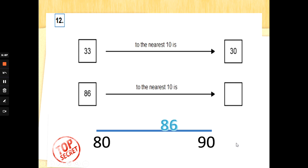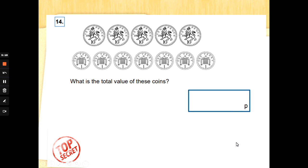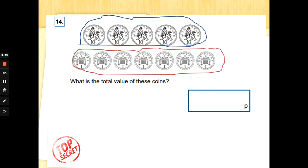Number 14: we've got some 10ps and some 1ps, tens and ones. What is the total value of these coins? First you count your tens: 10, 20, 30, 40, 50. Then we count the ones: one, two, three, four, five, six, seven. We've got 57 pence. Well done.